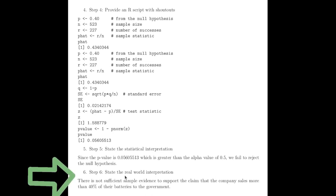And finally, we state the real-world interpretation, which is there is not sufficient sample evidence to support the claim that the company sells more than 40% of their batteries to the government. The reason why is if we assume the null hypothesis, which is saying that they're not selling more than 40%, that it would not have been unusual to get the results that we got.